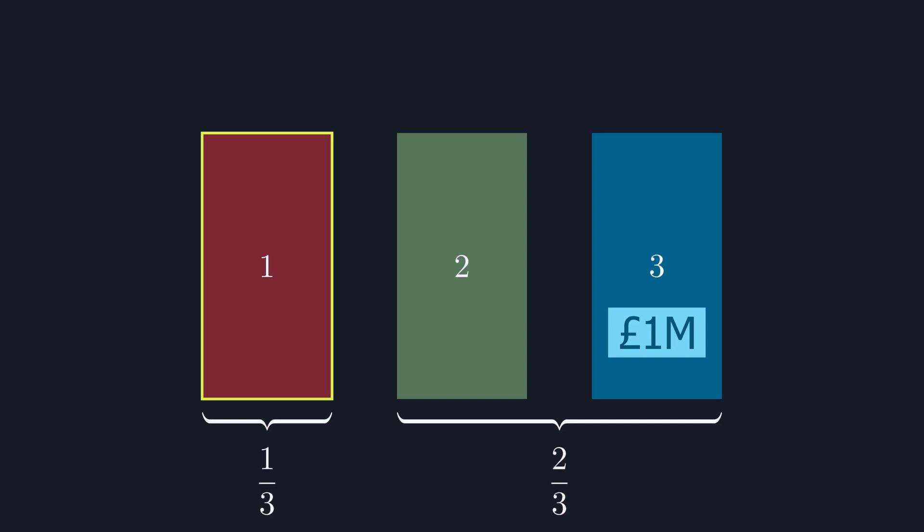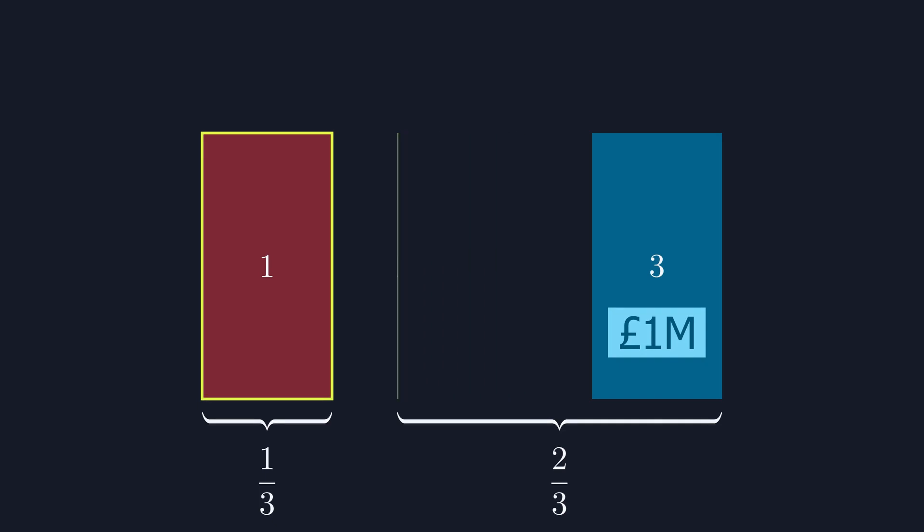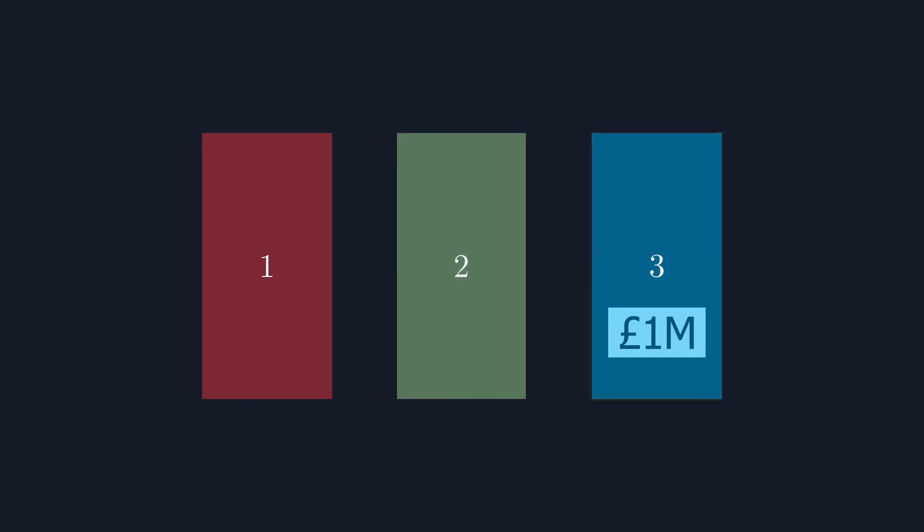Now, our game show host, knowing where the money is, and knowing that we've picked door one, has no option but to open door two, at which point it's clear that switching would allow us to win and not switching wouldn't.